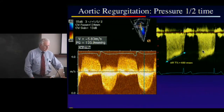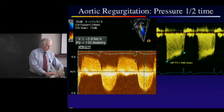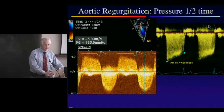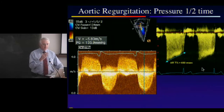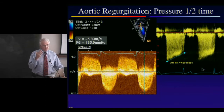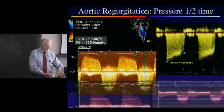Pressure half-time is an adult technique used to assess aortic insufficiency — it works the reverse way of mitral stenosis. The flatter the curve, the less the degree of insufficiency; the steeper the curve, the more severe. The numbers are simple: if over 400 it's mild, if under 200 milliseconds it's severe, and moderate is in between.